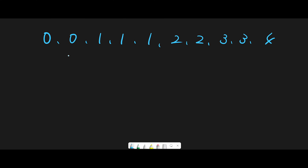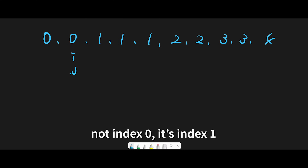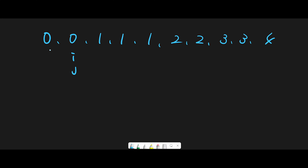To remove duplicates, my strategy uses two pointers. One pointer, let's call it i, marks the place where we write the next unique number. The other pointer, j, iterates through the array one by one. We can start from index zero, since the element at index zero is always the first unique number, so we don't need to touch it.